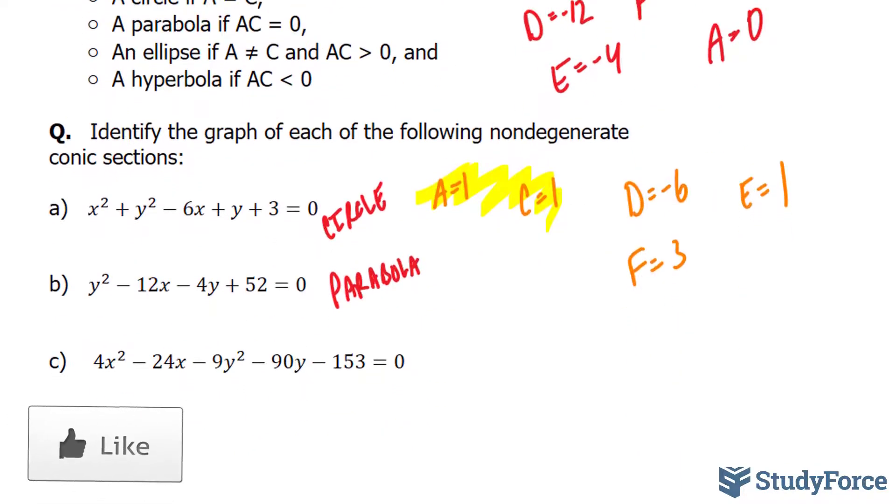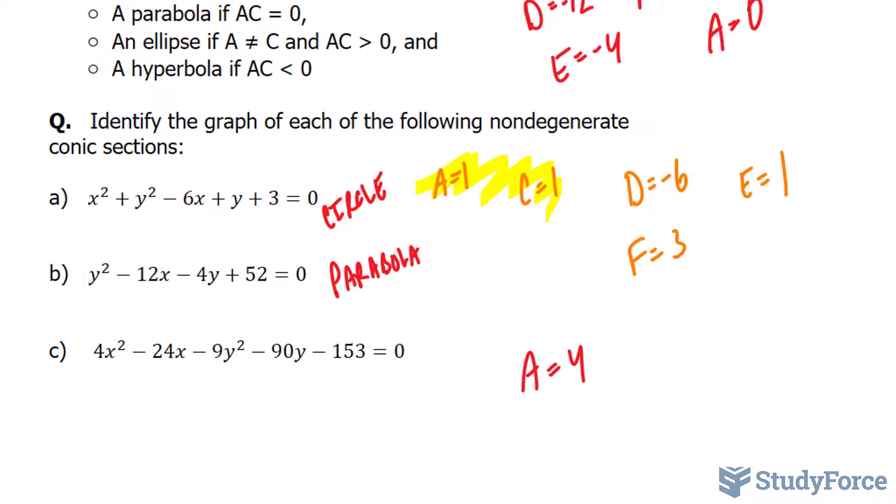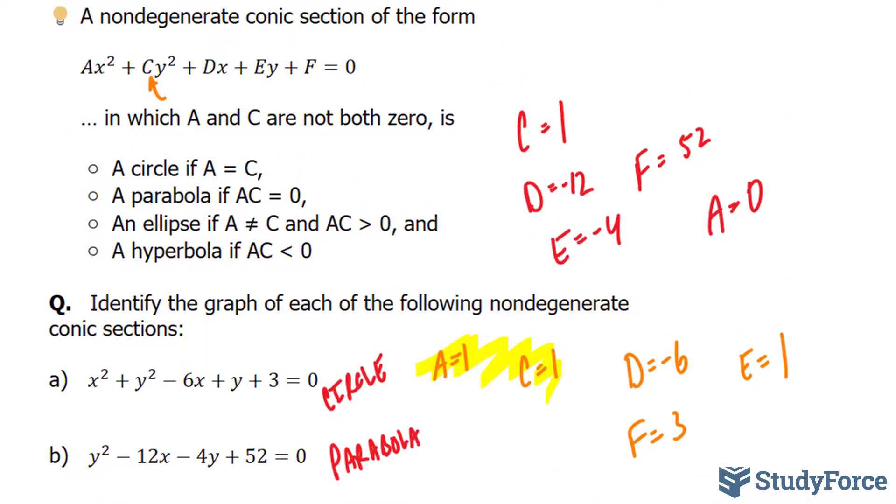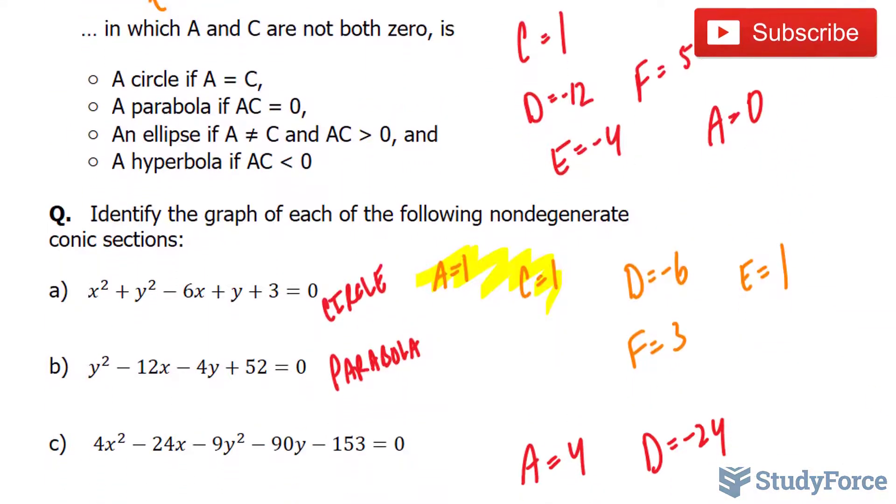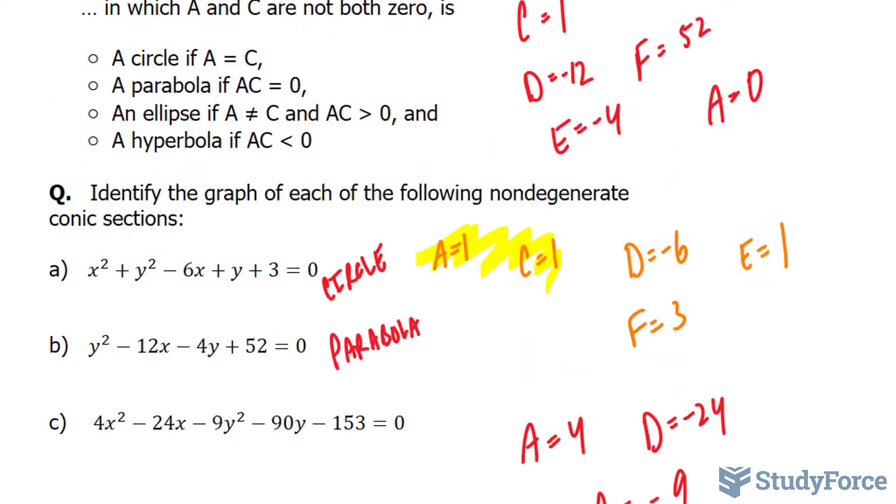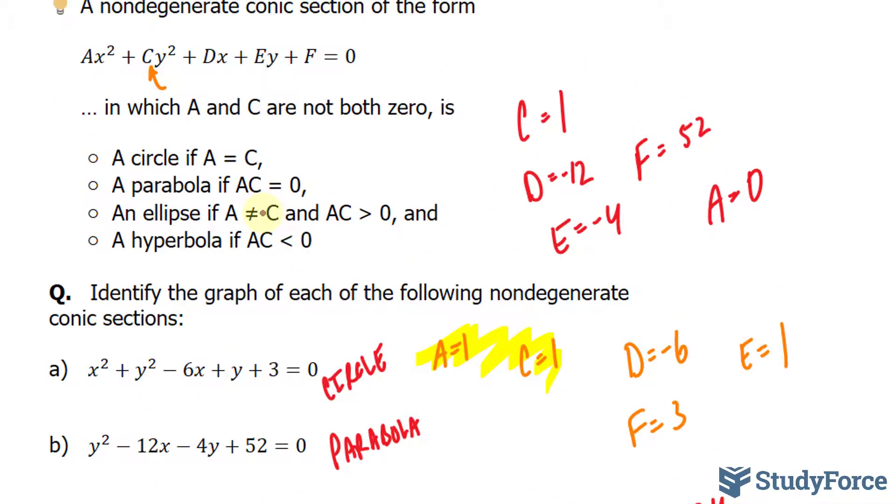Lastly, you might find this equation familiar because we graphed it in a previous video. Let's find out what it is. Our A value is 4, D = -24, and C = -9. I'll stop there because the patterns we're looking for only involve A and C. The rest don't matter in this case.